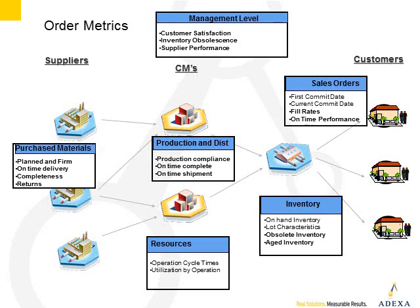First there's the sales orders. We want to collect first commit dates so that we understand what the customer was asking for in terms of delivery of the order. We want to understand what the current commit date is so we can analyze whether or not we're hitting the commit dates the customer has asked for. We also want to look at fill rates and on-time performance to understand for which products and which customers we're performing well.